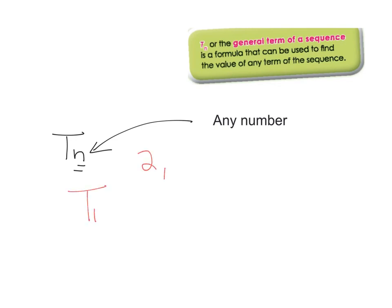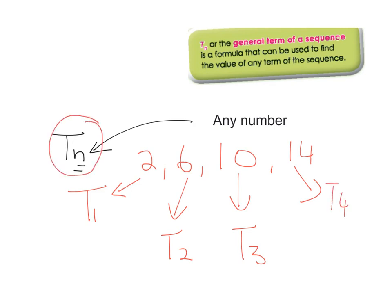So when you're given a sequence, you can immediately find term 1. So say if I'm given the sequence 2, 6, 10, 14, I can immediately find term 1, find term 2. It's possible I've already been told term 3. In this case, I already know term 4. But if I can find term n, it means I can find whatever term I want. So that's what we're looking for. We're looking for T to the n, which is the general term of a sequence, and it can be used to find the value of any term.